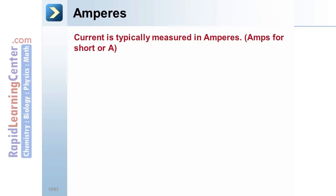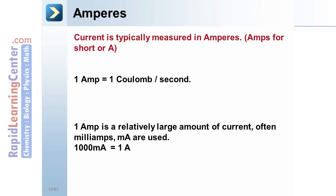Amperes. Current is typically measured in amperes or amps for short. And an amp is equal to a coulomb per second. This means that one coulomb of charge passes by each second. Now, since an amp is a relatively large amount of current, we will often use other units like milliamps. Remember, 1000 milliamps equals an amp.